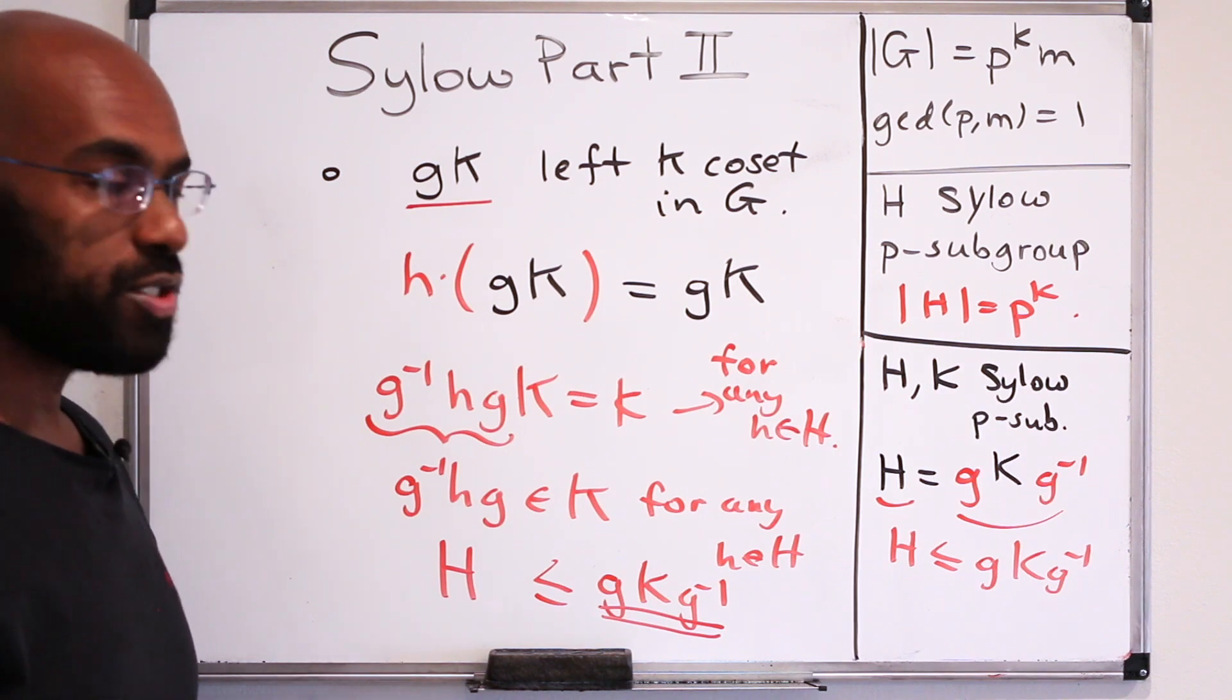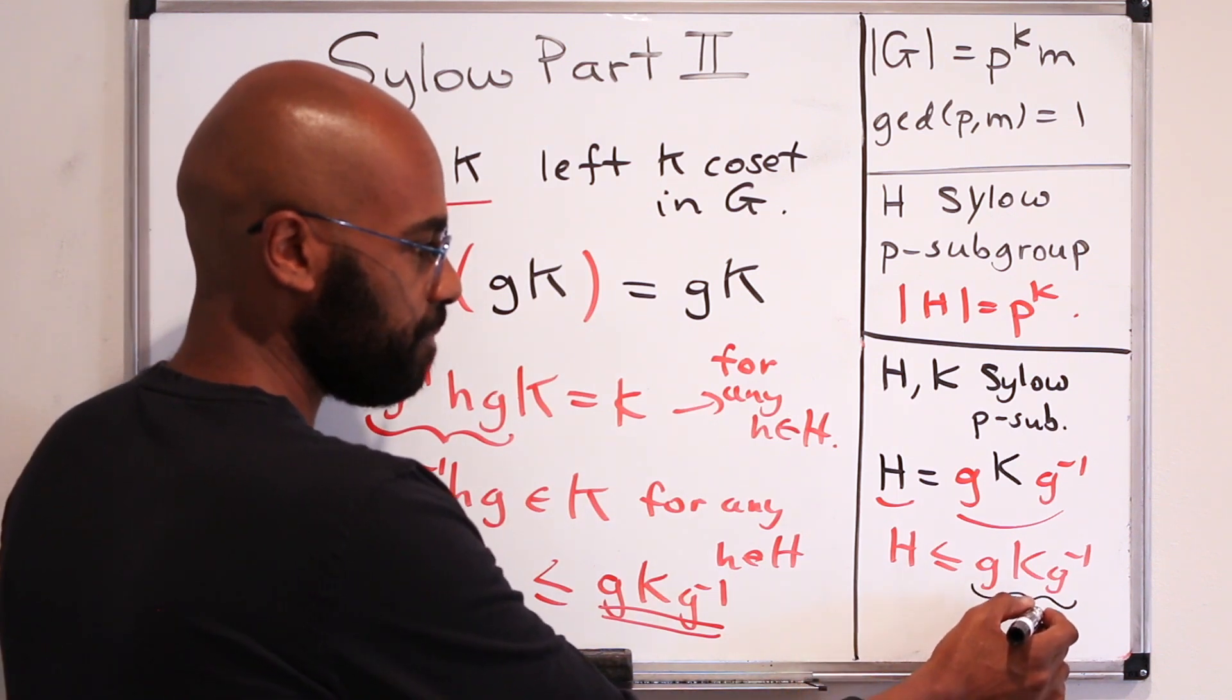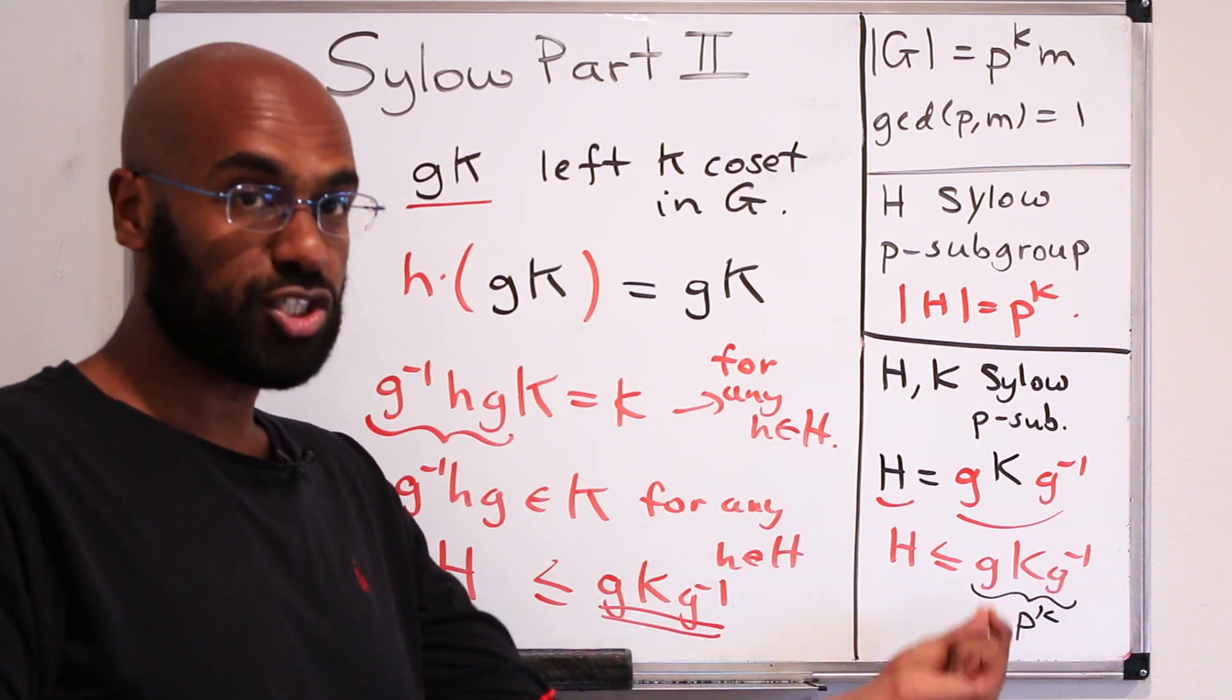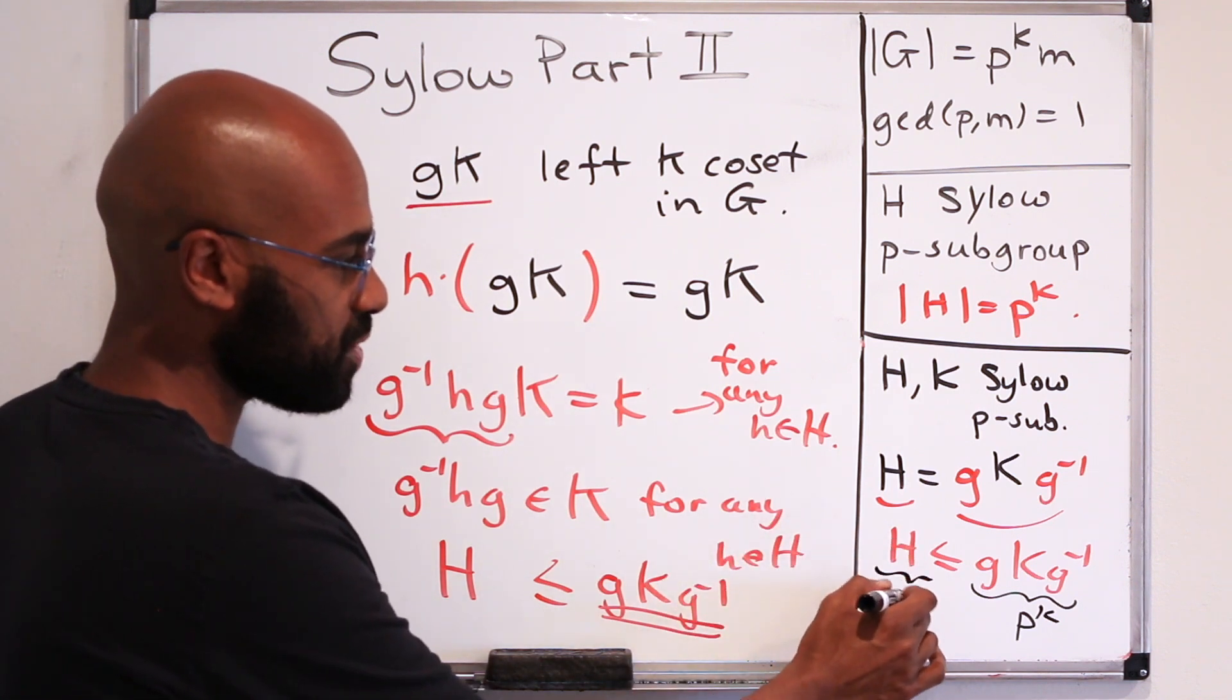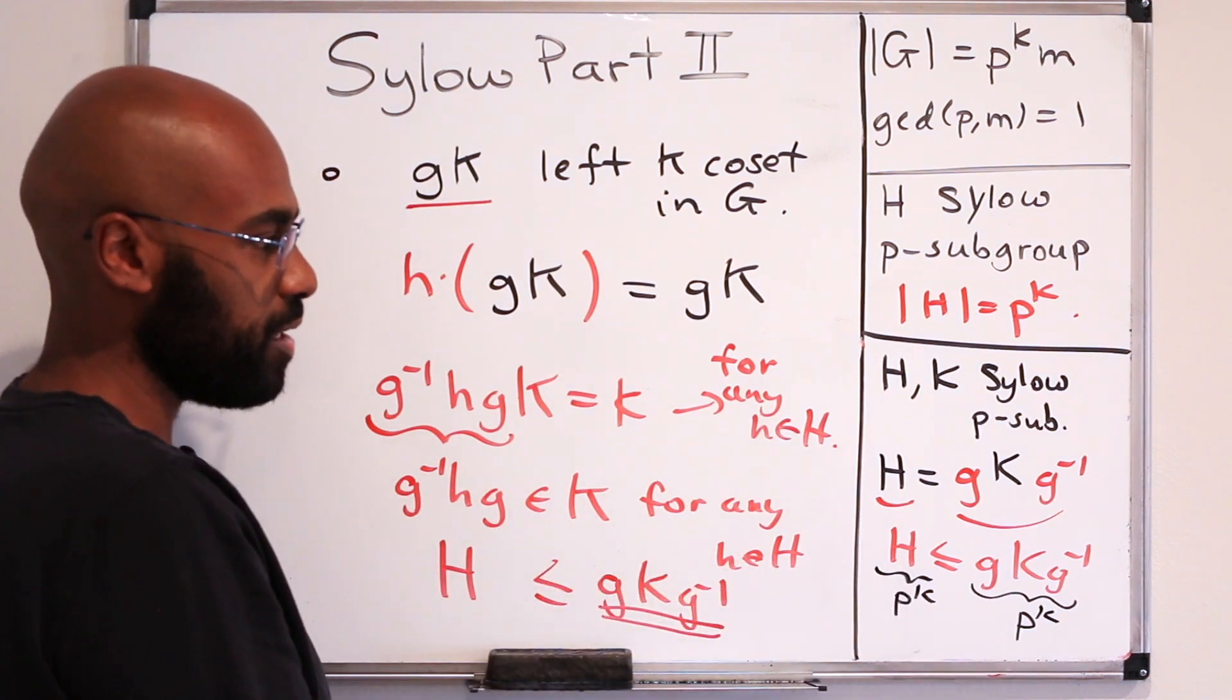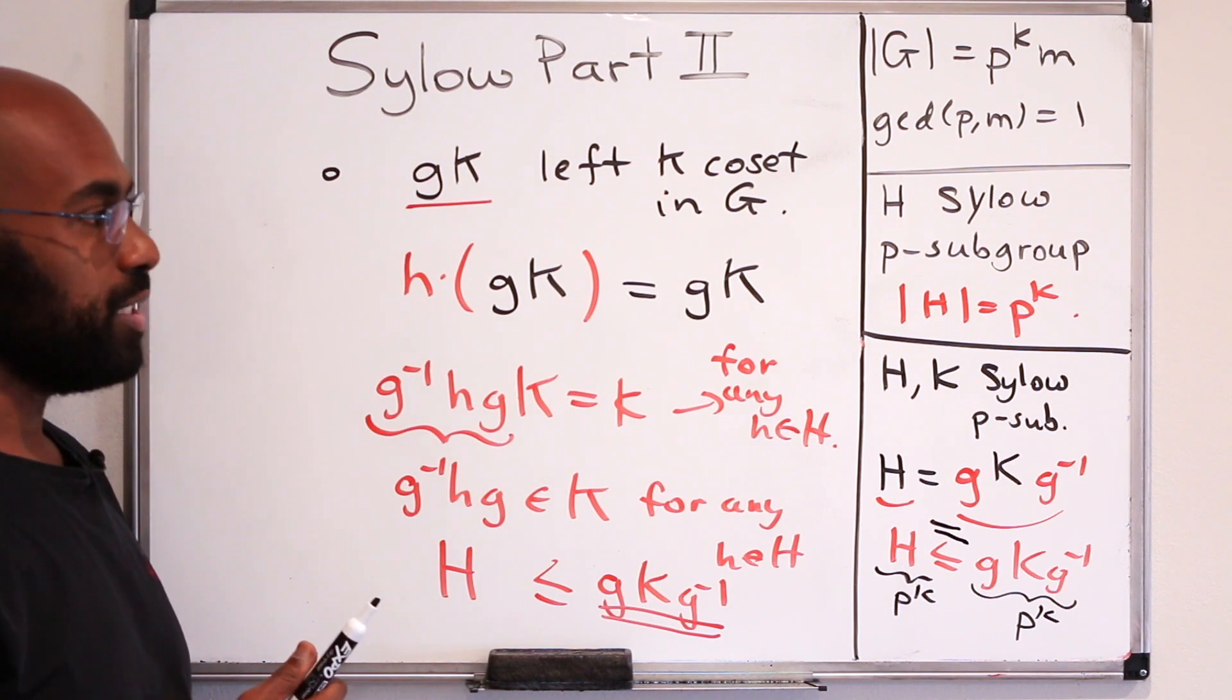So we're close to having equality. We know right now that H is actually a subgroup of the group on the left. How do we get equality? Well, we mentioned earlier in the video that this thing has the same size as K, so it has size P to the K. And the reason it has the same size as capital K was because we had a set bijection between this and capital K itself. So here we have this subgroup H, but it's also a Sylow-P subgroup, so it has size P to the K as well. So you have a size P to the K group sitting inside of a group of size P to the K. That means this has to actually be equality. And so we get that these two subgroups are actually equal.